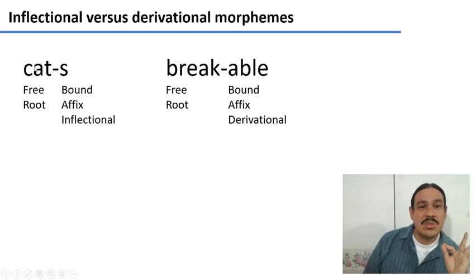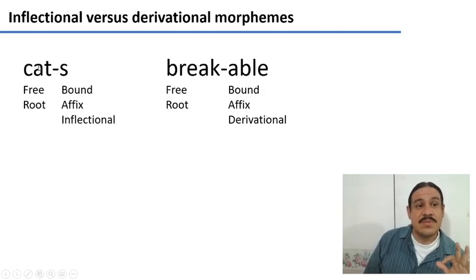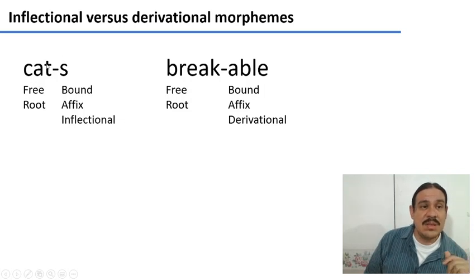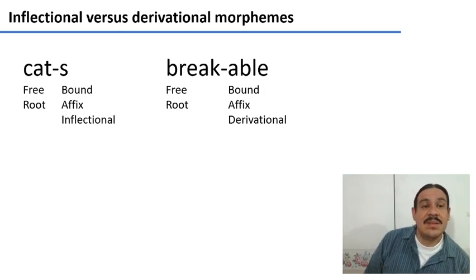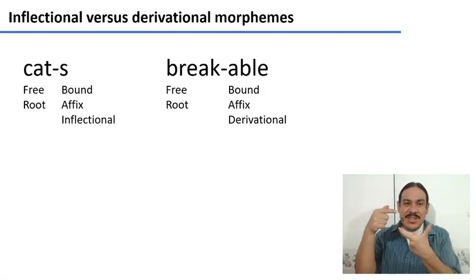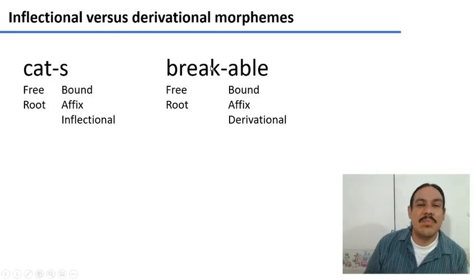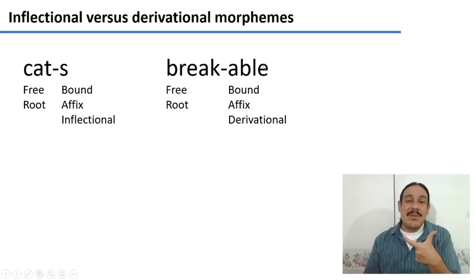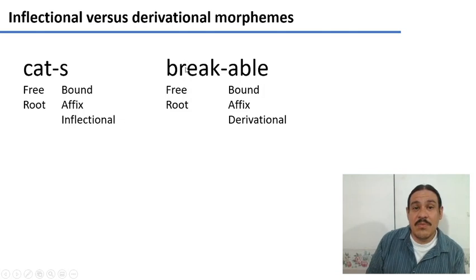As a quick review, we describe morphemes using these terms. For example, 'cats' has two morphemes. The first part is a root that is free, because it can exist on its own as a word. The second morpheme 's' is an affix — it is a bound morpheme because it cannot exist on its own, and it is inflectional because it adds grammatical meaning: it's cat, just many of them. 'Breakable' has a free root, 'break,' and an affix 'able' which is bound because 'able' cannot exist on its own. It is derivational because it changes the word from a verb to an adjective and changes the meaning — for something to be breakable.